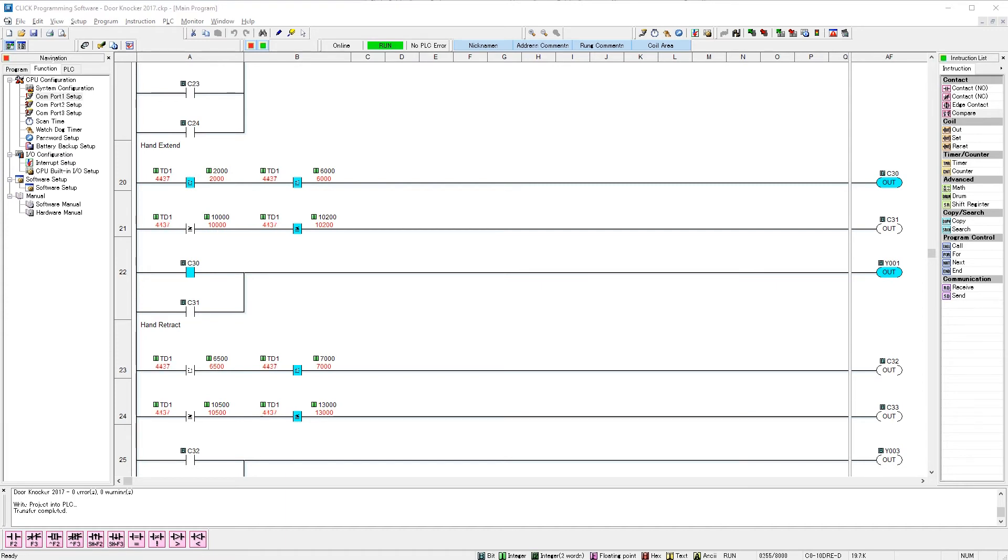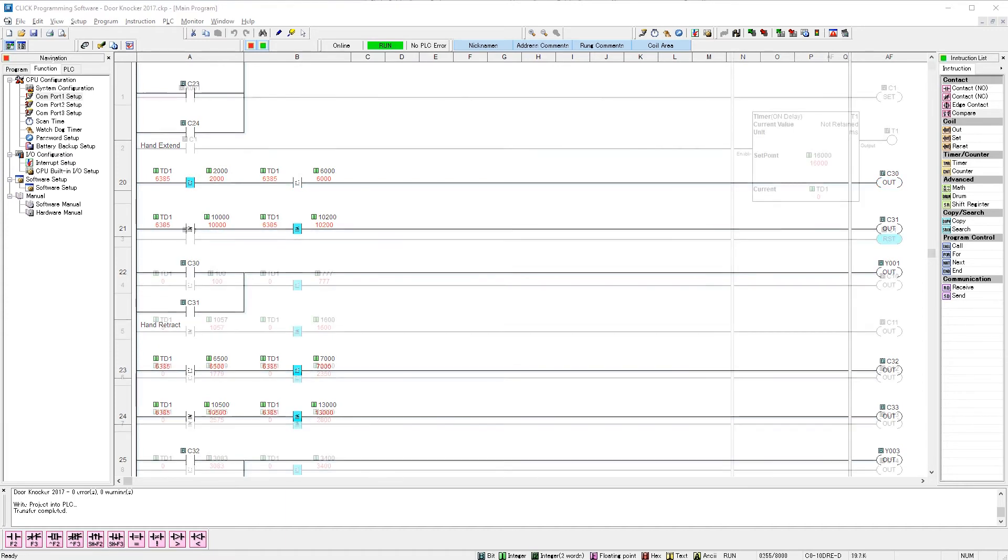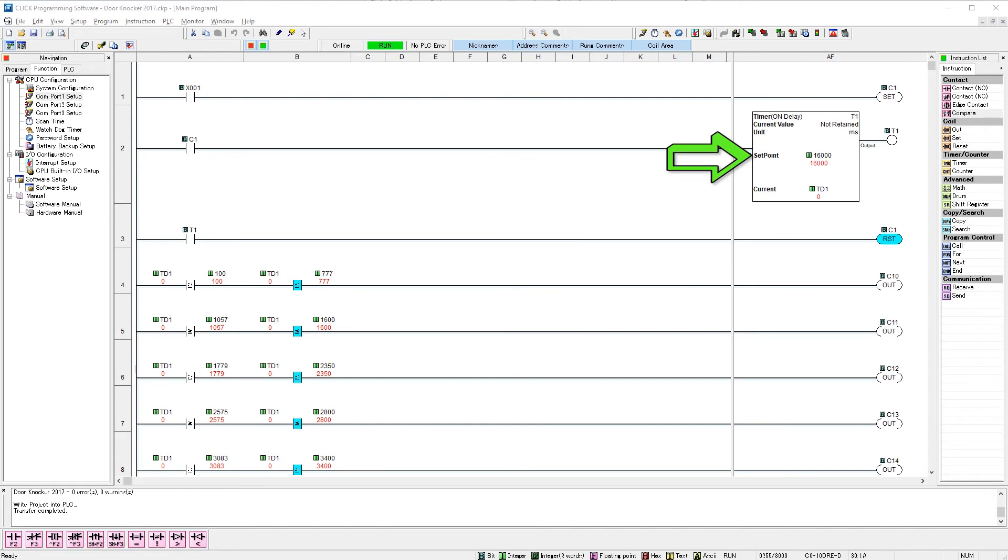I use similar timer compare instructions for each of our five outputs. After the timer reaches its set value of 16 seconds, we reset the timer. Once everything is reset, the system is ready for another round.